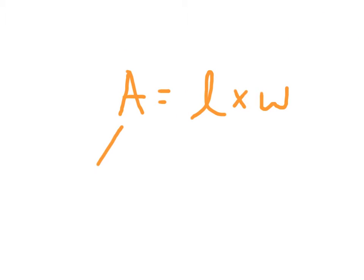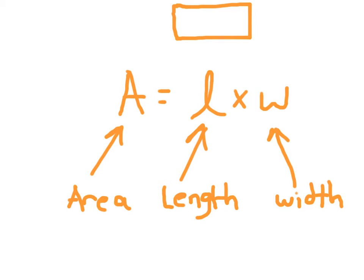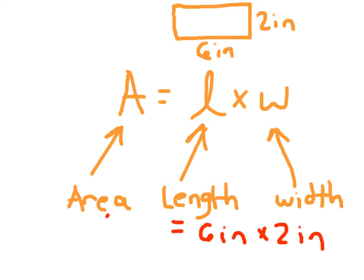This is the formula for figuring out area: area equals length times width. So for area, it equals length times width. If we had this rectangle here — and this is for the area of rectangles or squares — and the dimensions of the rectangle are 6 inches and 2 inches, then the length is 6 inches. This is the length here, and this will be the width. So we multiply 6 times 2, and 6 inches times 2 inches to get 12 square inches.